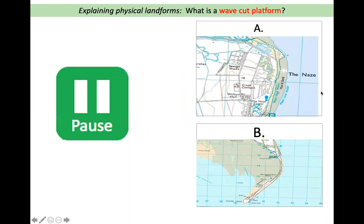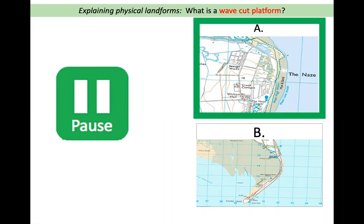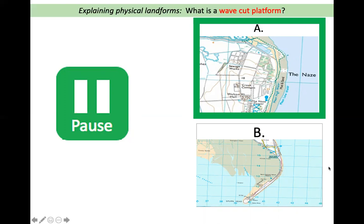Pause the video and decide which of these is a wave-cut platform. The answer is A. In A we have an area of mud and sand but importantly we have the mean low water mark and the mean high water mark showing a wave-cut platform. In B we have a very different and distinct landform which is a spit — it has mud and sand behind it but this landform has a very distinct shape that we should know is a spit.